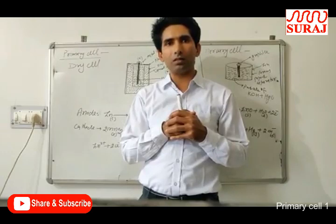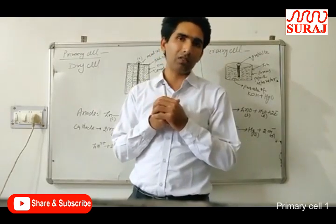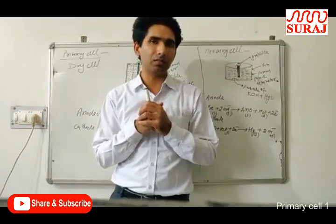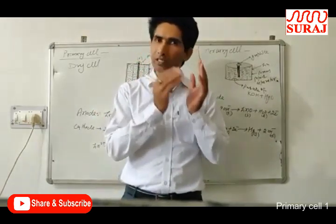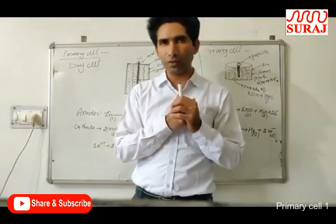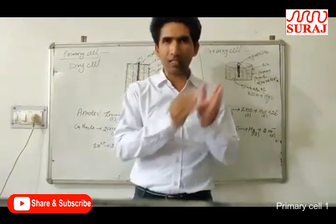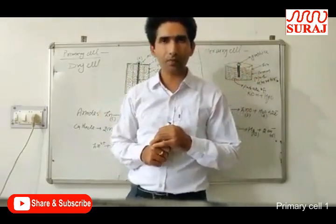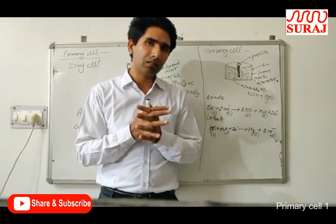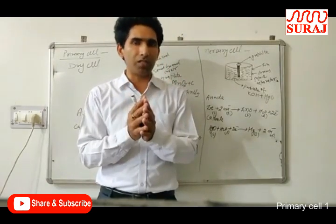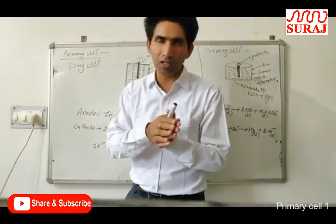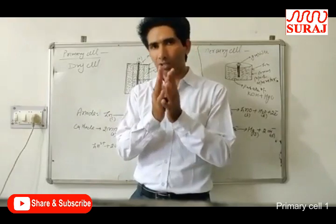In our 12th class we discuss three types of cells: first is the primary cell, second is the secondary cell, and third is the fuel cell. In the primary cell, the redox reaction — meaning the oxidation reaction occurring at the anode and the reduction reaction at the cathode — occurs only once.